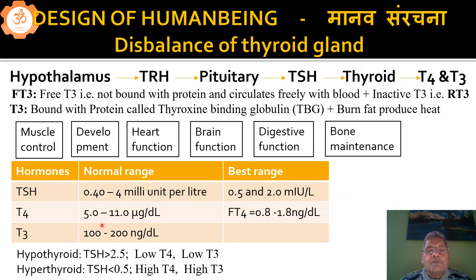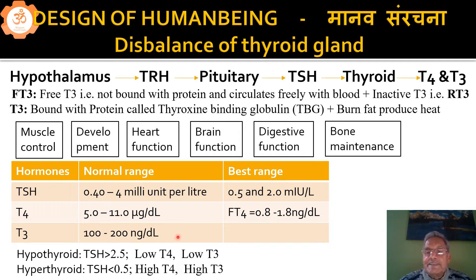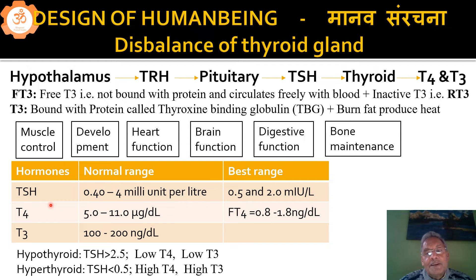The normal range for T4 is 5 to 11, and free T4 should be in the range of 0.8 to 1.8 nanograms per deciliter. Similarly, T3 should be in the range of 100 to 200 nanograms per deciliter. This is the normal range. Measurement of T3 is also important. Normally when testing is done, the range of T3 and T4 is given, and treatment is possible based on this. But if you want the perfect test, both FT3 and FT4 are the important parameters.